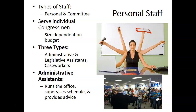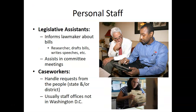Congressional staff help senators and representatives in every way possible — communicating with voters and other members of Congress, writing bills and reports, and conducting research. There are two categories: personal staff and committee staff. Personal staff serve the individual congressman or congresswoman, and the size of that staff depends on the individual congressperson's budget. Administrative assistants run the office, supervise the schedule, provide advice, and may even write bills.